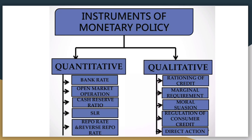चौथा है regulation of consumer credit — जब भी demand बढ़ जाती है तो consumer durable products के prices high हो जाते हैं। Central bank consumer credit को maintain रखने के लिए installment या repayment को कम amount में ज़्यादा numbers में कर सकती है, ताकि consumer credit बना रहे। पांचवां है direct action — bank regulation act के तहत central bank के पास authority होती है कि वो commercial banks के खिलाफ कार्रवाई कर सकती है और सही चीजों को सही direction में चला सकती है। ये कुछ tools और instruments होते हैं monetary policy के।